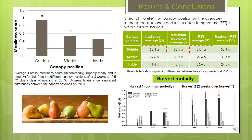The mealiness score results correlated well with the X-ray CT data. The average mealiness score was significantly higher for outside canopy fruit, and this can be associated with a significantly higher percentage exposure to sunlight and the highest average fruit surface temperature.